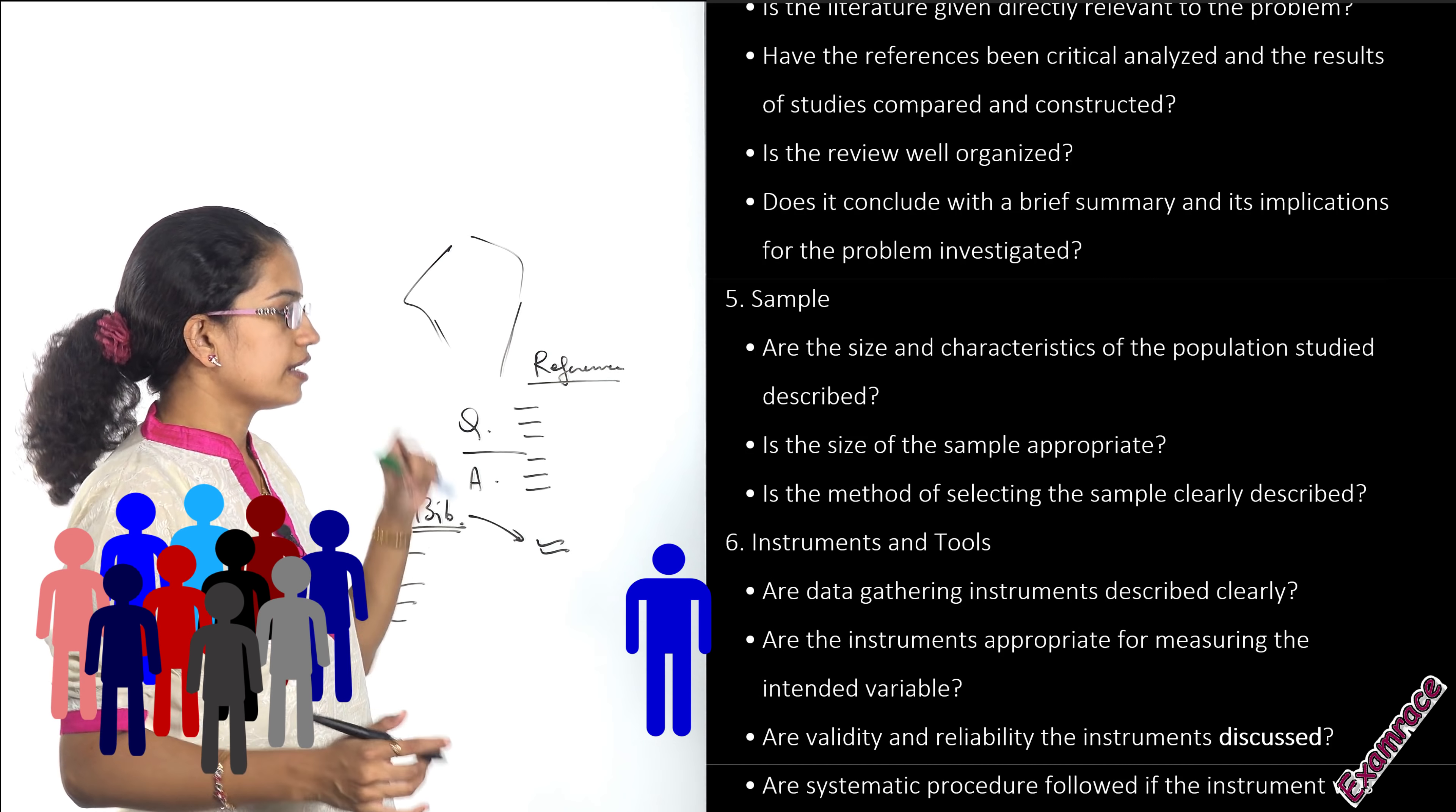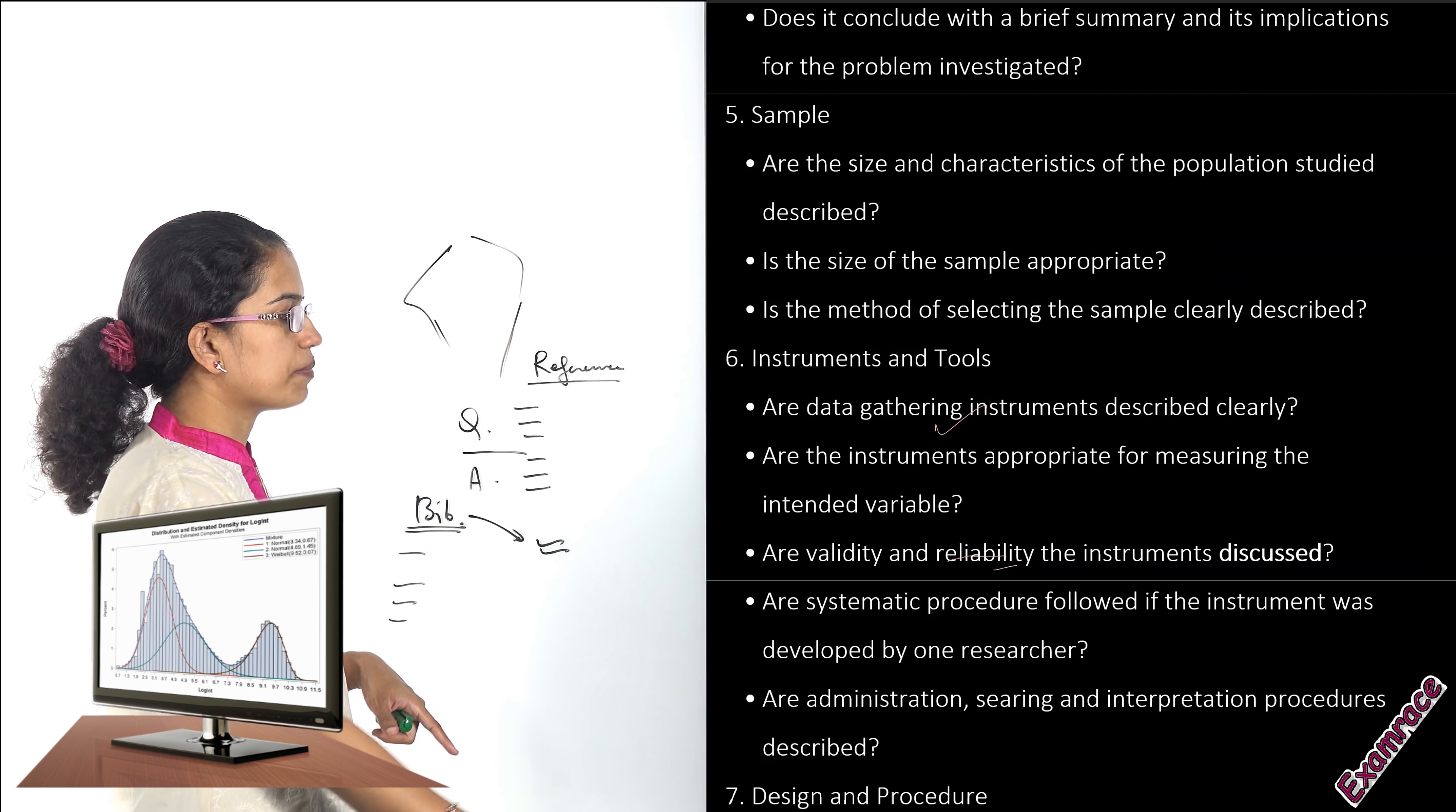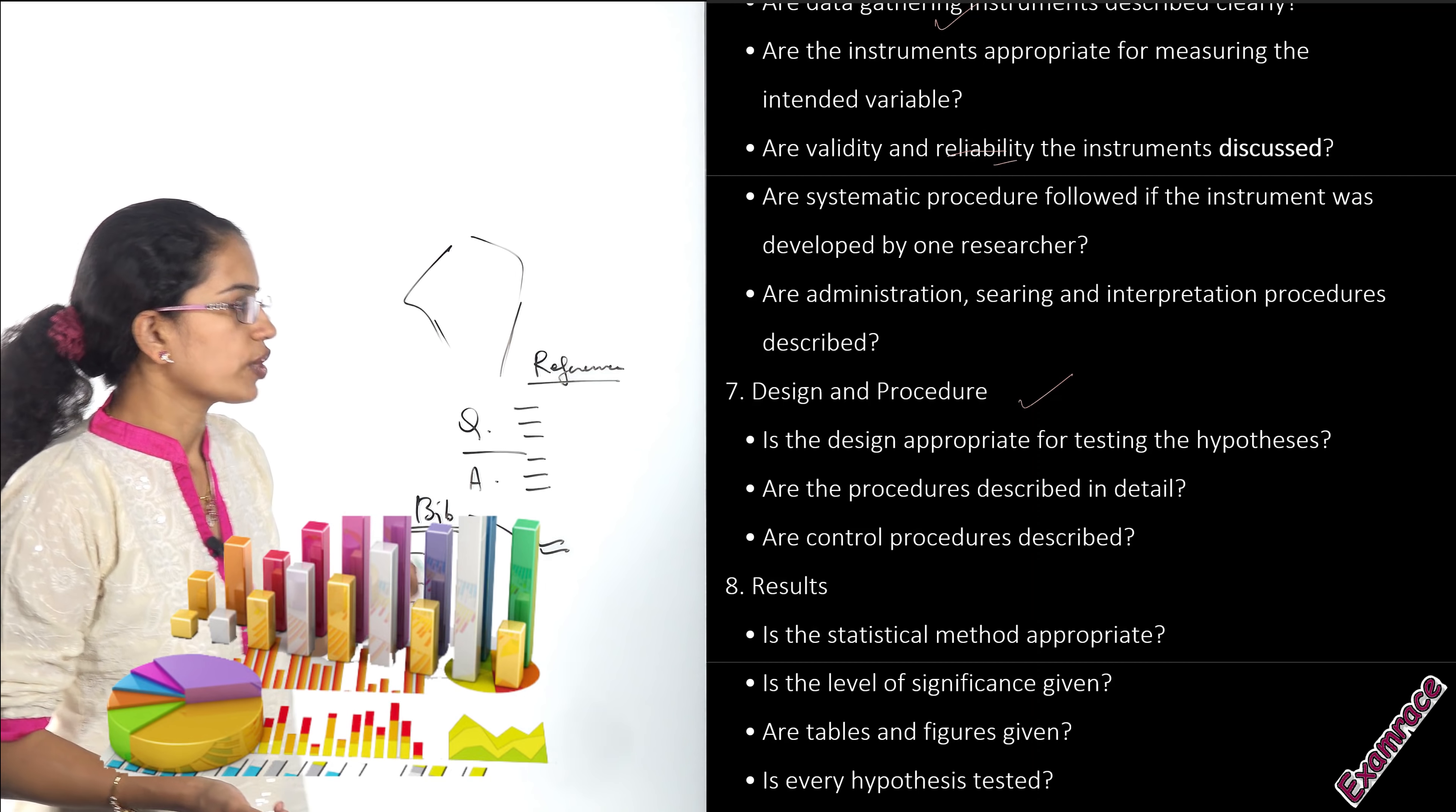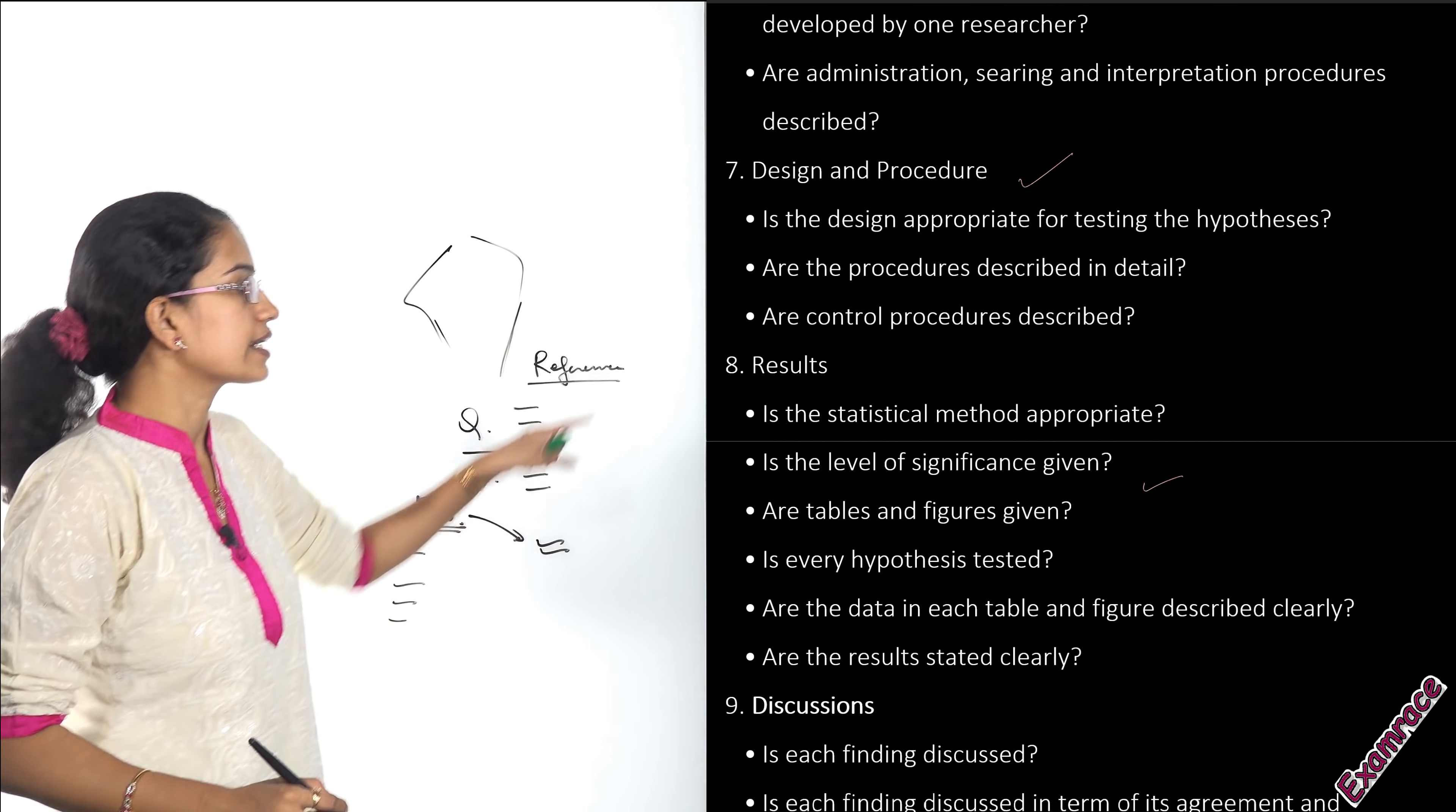For instruments and tools, we would talk about what kind of data is being used, what are the statistical techniques that we are applying, whether it is reliable or valid, and whether the interpretation settings are good. We will talk about the procedure—how we would test the hypothesis, what is the layout, and how we can control the procedure. Then we will talk about the results and the level of significance.